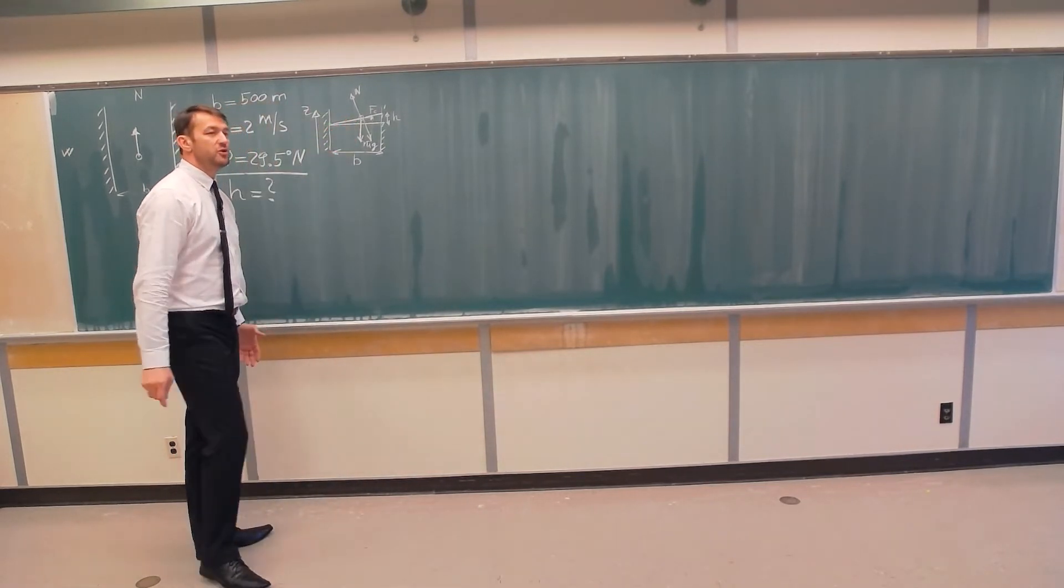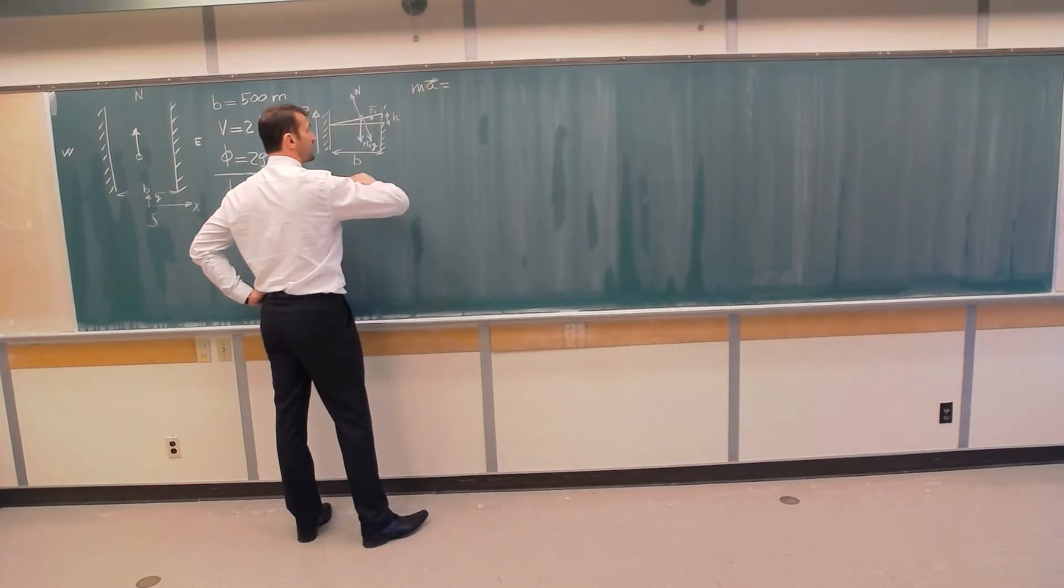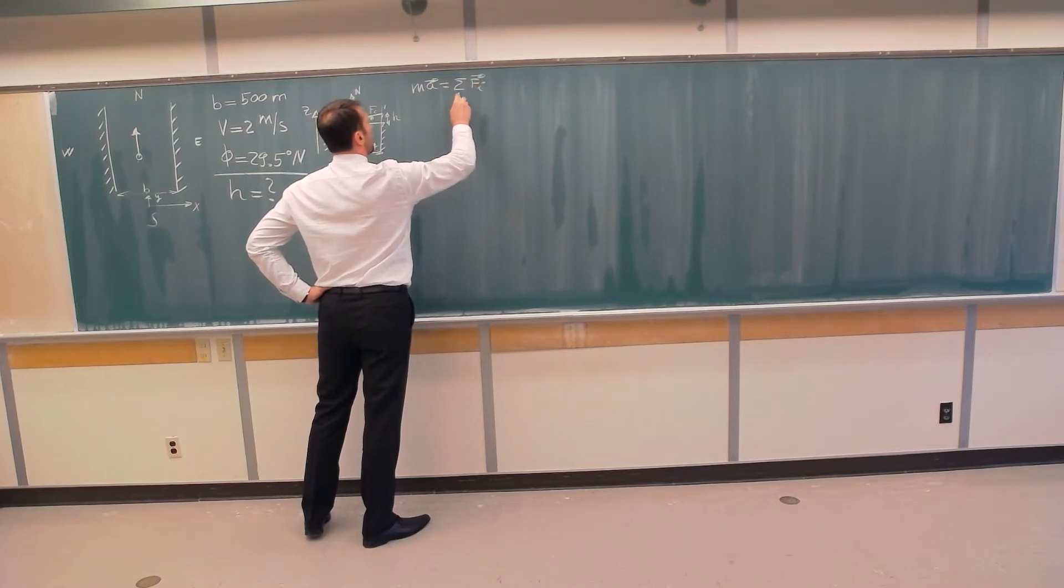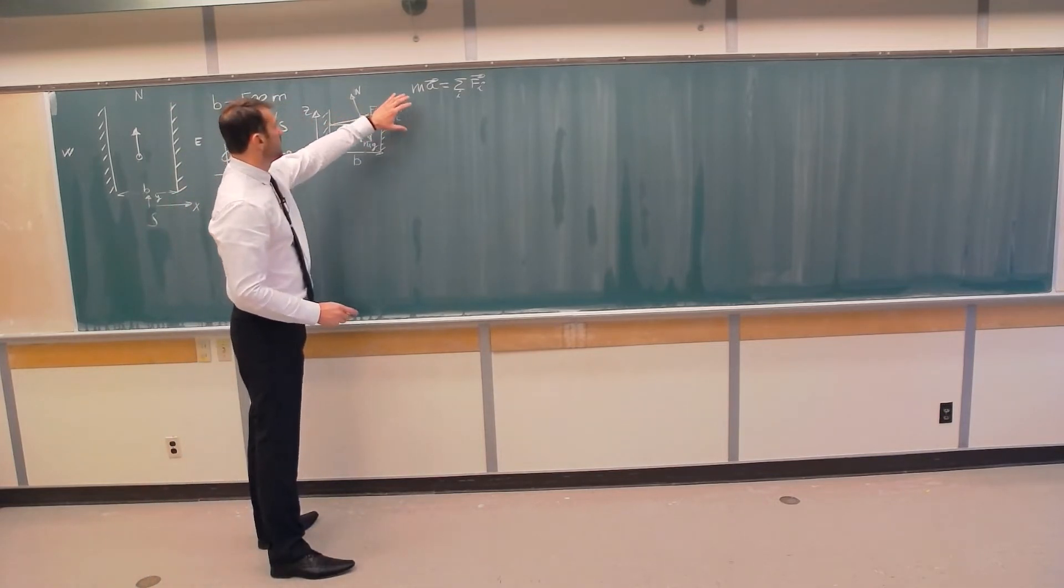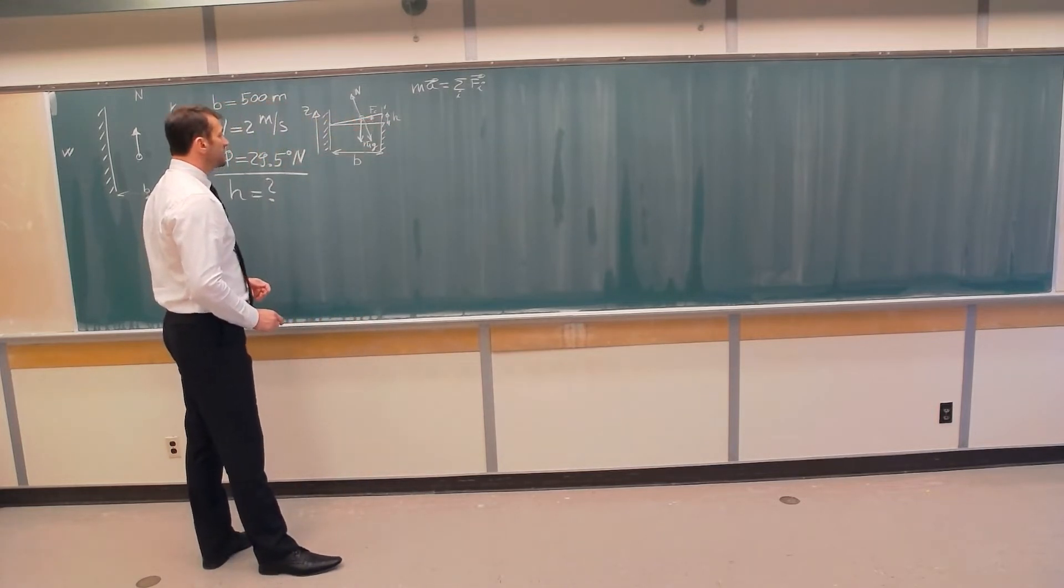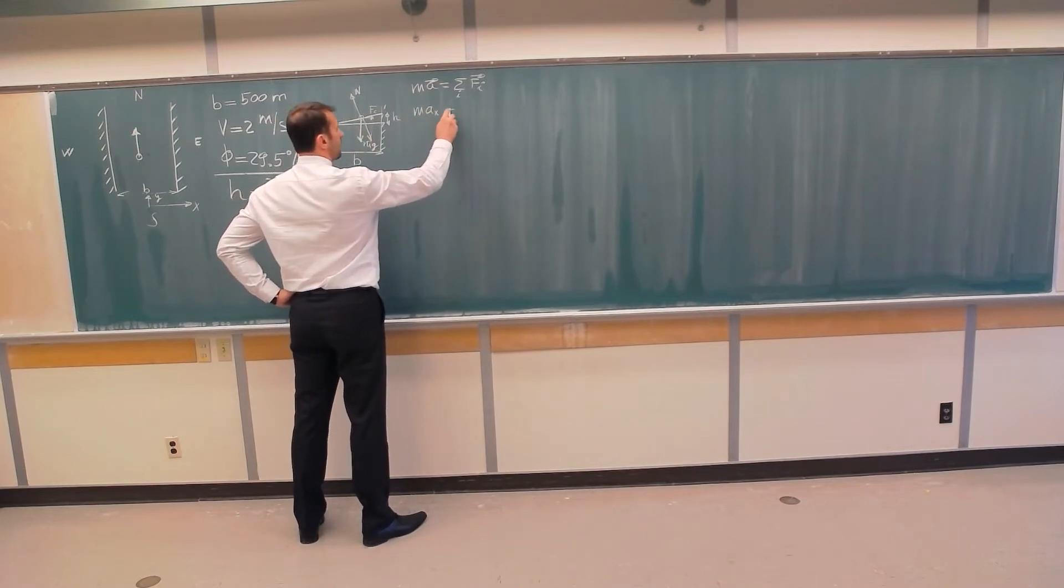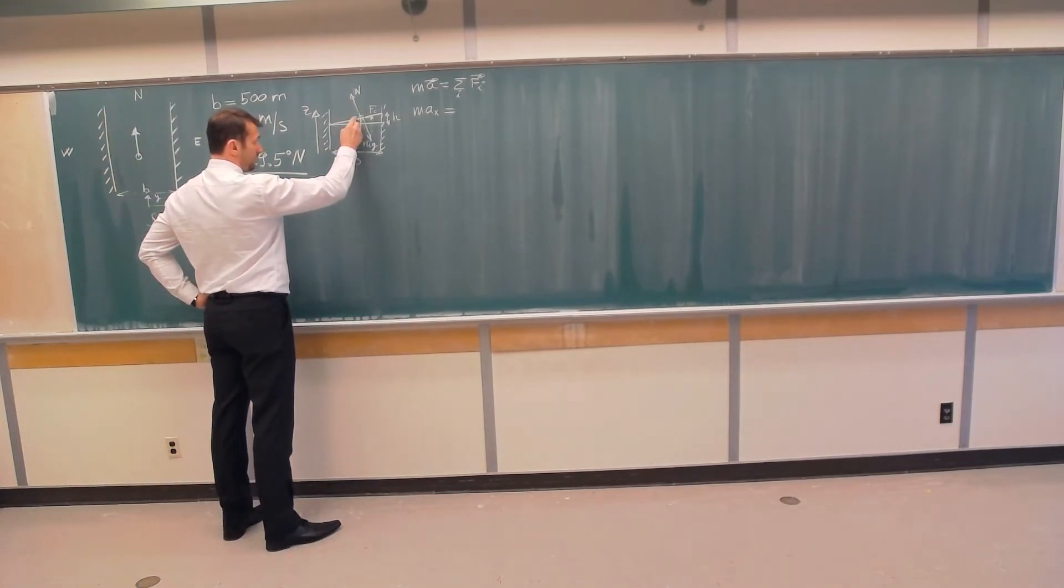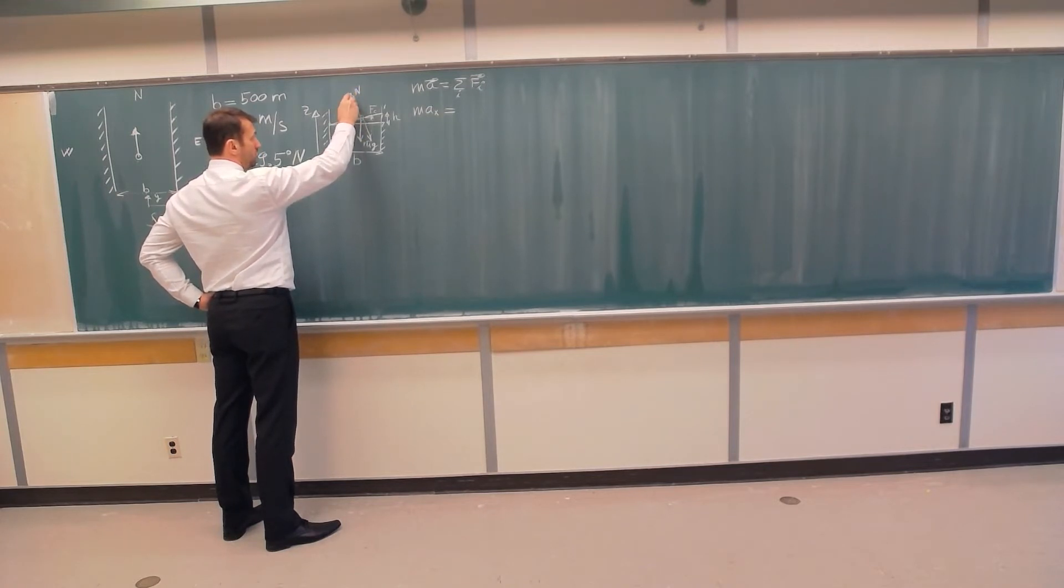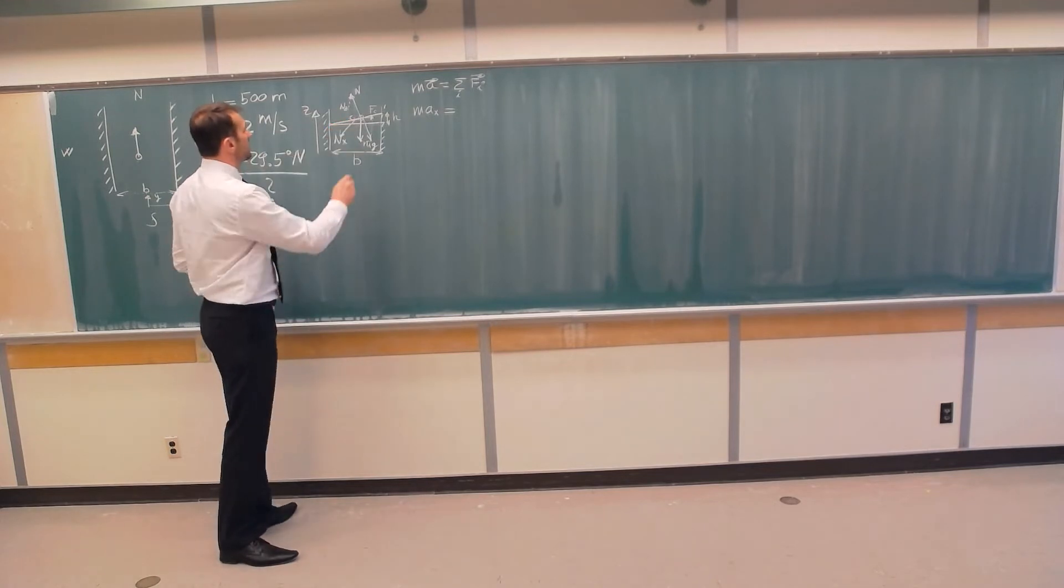To solve this problem we use the greatest law ever discovered, Newton's second law. Mass times acceleration of this parcel of water is the sum of all forces acting on this parcel of water. We will decompose this vector equation into zonal x direction and vertical z direction. So mass times acceleration in the x direction is equal to what are the forces in the x direction? This normal force I will decompose into this component and this component.